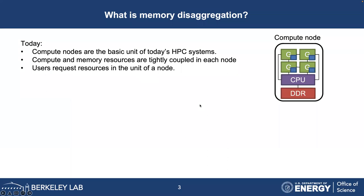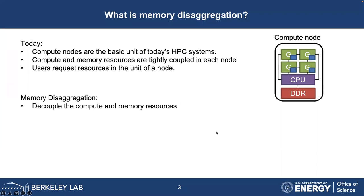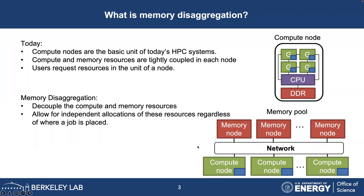Compute nodes are the basic unit of today's HPC systems. Compute and memory resources are tightly coupled in each node, and users request resources in units of a node. Conversely, memory disaggregation aims to decouple compute and memory resources. You would have a memory pool with many memory-only nodes shared across compute nodes, allowing independent allocation of resources regardless of where a job is placed. Applications could use all the memory available across an entire data center instead of being confined to a single server.